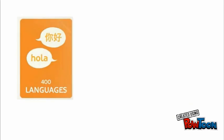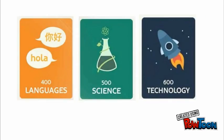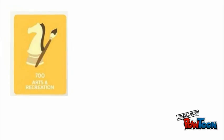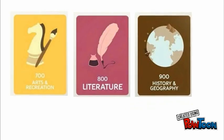The 400s contain languages. The 500s contain science and mathematics. The 600s contain technology. The 700s contain arts and recreation. The 800s contain literature, and the 900s contain history and geography.